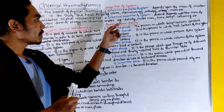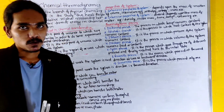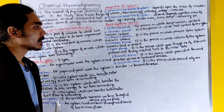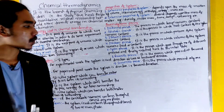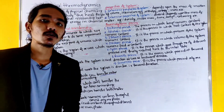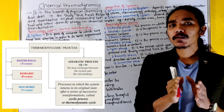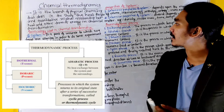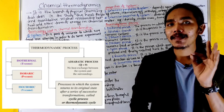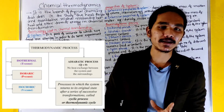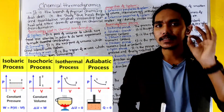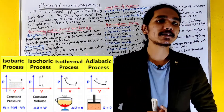In thermodynamic processes, the first is the isothermal process, where temperature remains constant. The second is the adiabatic process, in which total heat content remains constant — the total heat content of the system is constant.